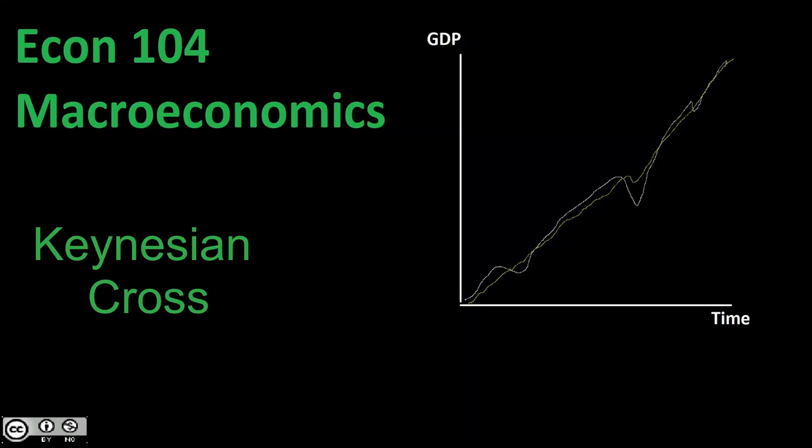Welcome back to Econ 104, Introduction to Macroeconomics. In this video, we're going to be taking a look at our Keynesian cross model. In our intro to macroeconomics, this is really our fundamental workhorse model — our introduction to our workhorse model, rather. It's going to be our first model we take a look at to explain our economy, to explain why things work the way that they do: how come we have increases in output, drops in output, all of that. And then, as we carry forward, we will utilize this model to carry on and build our next model.